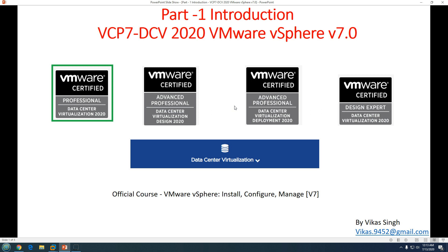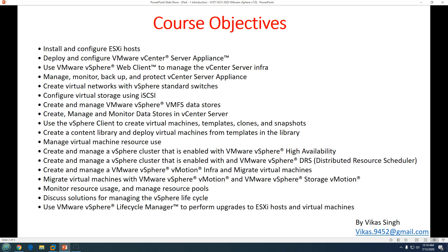One important thing: if you want to take the certification exam from VMware, you must get a voucher, which you can get from any approved or certified vendor that provides VMware certified training. To participate in the VCP7 or any VMware exam, you need training from an authorized training or coaching center that can also provide the certification voucher.